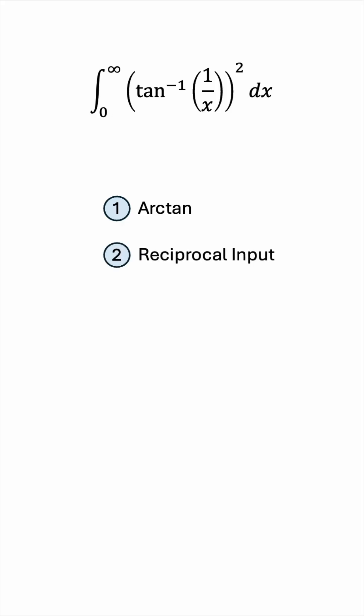Second, the input is not x — it's 1 over x, so this reciprocal input adds an extra layer of complexity. Then everything is squared to make it worse. And let's not forget that this integral is improper for two reasons: first, we have infinity in the upper bound, and second, we have 0 in the lower bound, which causes a problem because our input is 1 over x. So the question now becomes: does this integral even converge in the first place?